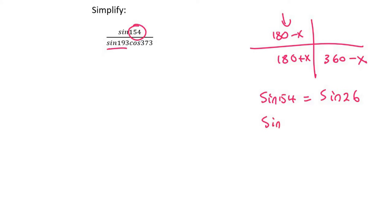Sin of 193. Well, 193 is in this quadrant where sin is negative, and so you'd end up with negative sin 13.